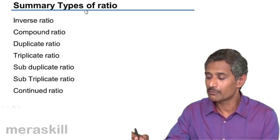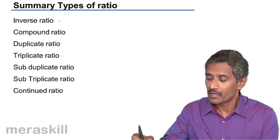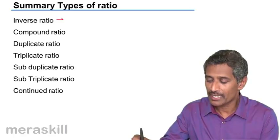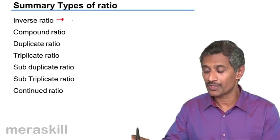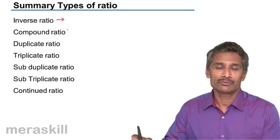So once we move into the summary of the types of ratios, we have inverse ratio. If you have a ratio 3 is to 5, its inverse ratio is 5 is to 3.